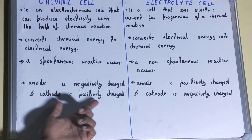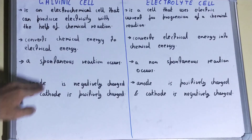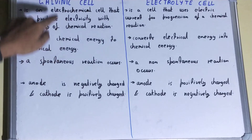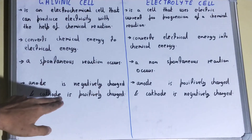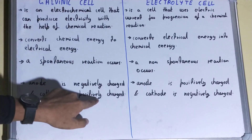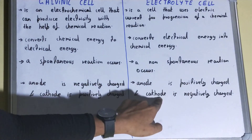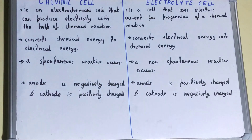In a galvanic cell, the anode is negatively charged and the cathode is positively charged. In an electrolytic cell, it is the opposite: the anode is positively charged and the cathode is negatively charged.